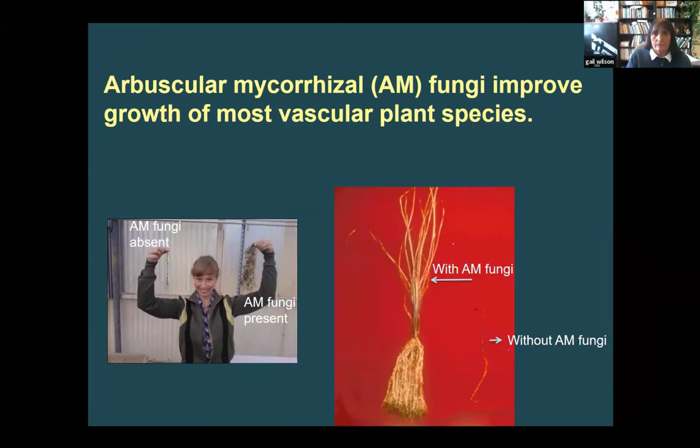If you look across the native tall grass prairies, our dominant plants — such as big bluestem, Indian grass, panicum, or switchgrass — not only form an association with this fungi, but in low-nutrient native soil, they cannot live without it. Without the mycorrhizal fungi, these plants cannot complete their life cycle. They can't grow at all.